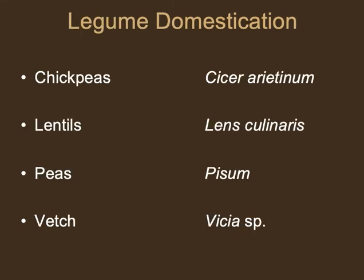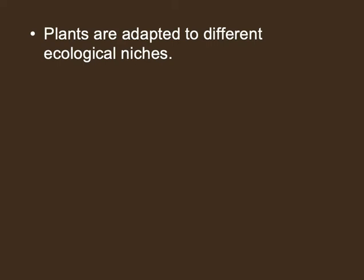Then there are legumes: chickpeas, lentils, peas, and vetch. These different domesticates complement each other nutritionally. In ancient times, if people were eating bread alongside crushed chickpeas — something like hummus — the wheat in the bread has some amino acids but lacks lysine, whereas chickpeas do have lysine. By eating them together you get a nutritional complement. These plants are also adapted to different zones — in southern Mesopotamia, because of the heat and irrigation-induced soil salinity, people tended to grow more barley.